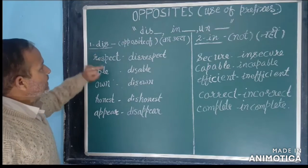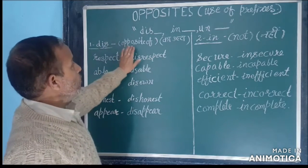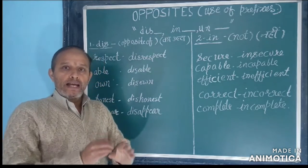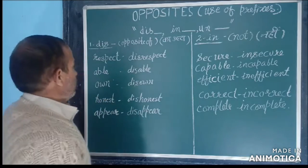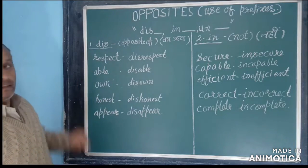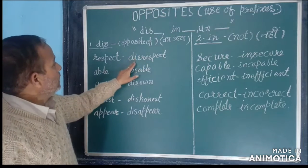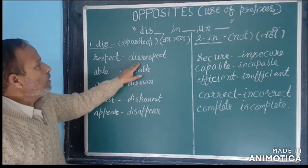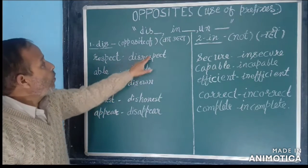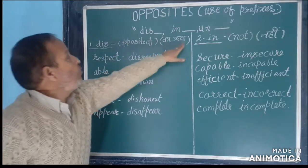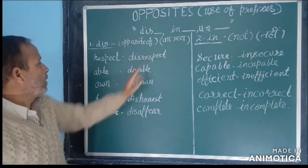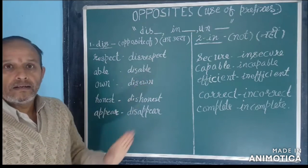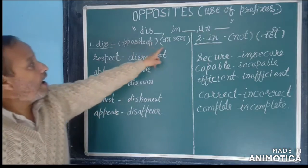Number 1: DIS — it means 'opposite of'. When we add DIS to the beginning of any word, it reverses the meaning of that word. First word: Respect → Disrespect. Respect means आदर करना (to show respect), and its opposite, आदर न करना (to not show respect), is Disrespect. Able (काबिल/capable) → Disabled (ना काबिल/not capable).